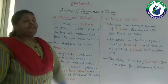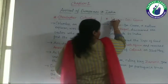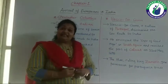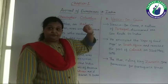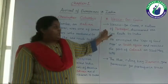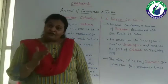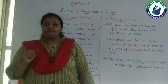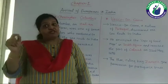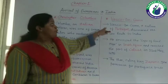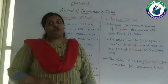Now the next effort, the next venture, the next initiative was done by Vasco da Gama. The next person who tried to find out the new sea route to India was Vasco da Gama. Vasco da Gama, a native of Portugal, discovered the sea route to India. Portugal is one of the countries of Europe, and the people living in Portugal are known as Portuguese. So Vasco da Gama, a native of Portugal, discovered the new sea route to India and was successful in reaching India.